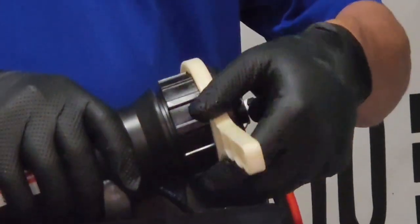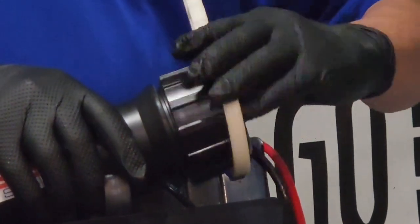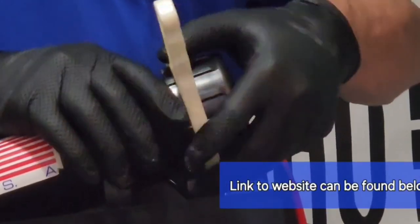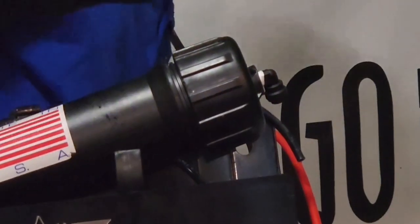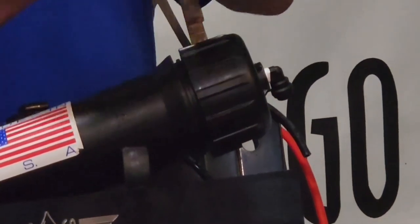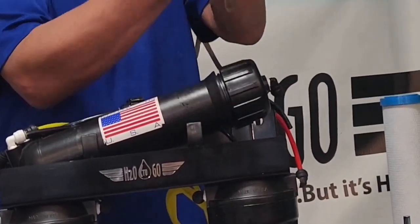You screw it this way. If you don't have one of these wrenches that you can get on our website, at h2o2go.net, I think they're like four or five bucks, or a big pair of channel locks will also work. Like this.